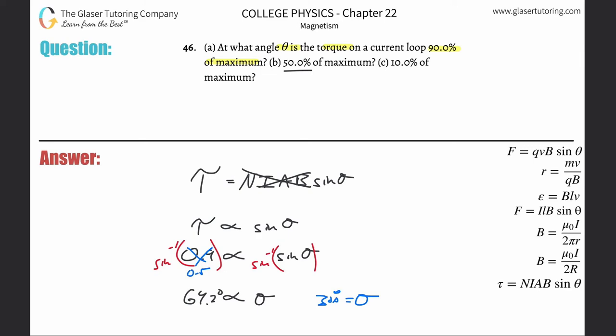And then when you plug in that 10% instead of 0.5, you're going to plug in 0.1. So take the inverse sine of 0.1, that's about 5.74 or so. So then the angle is 5.74 degrees.